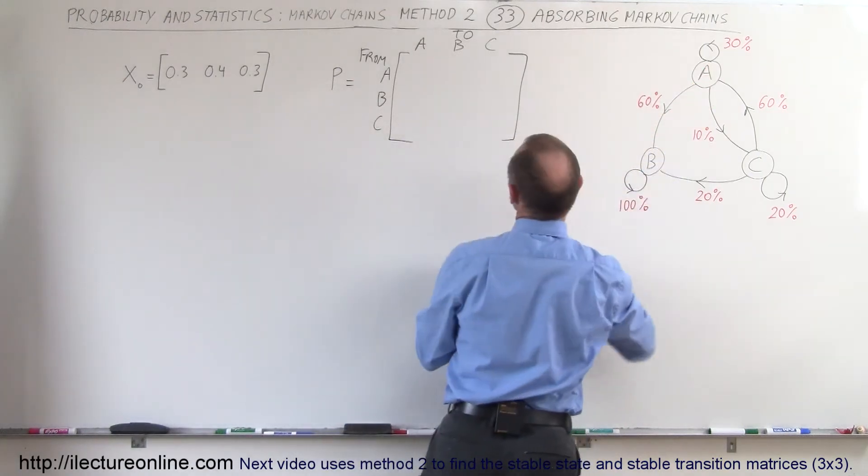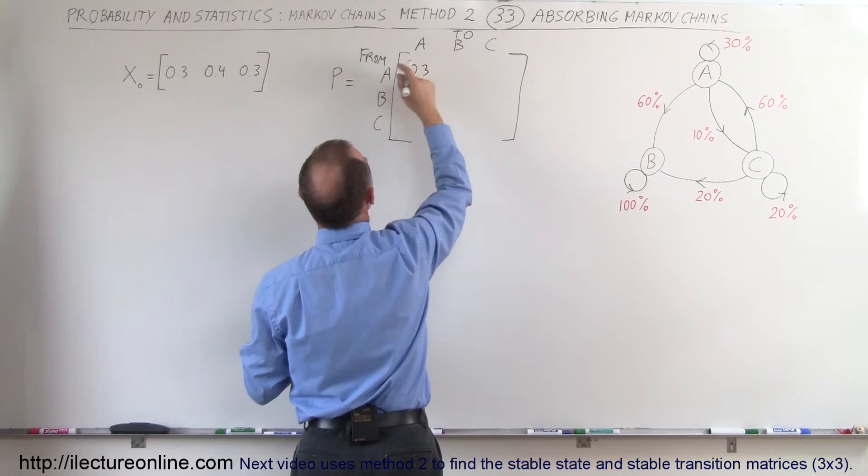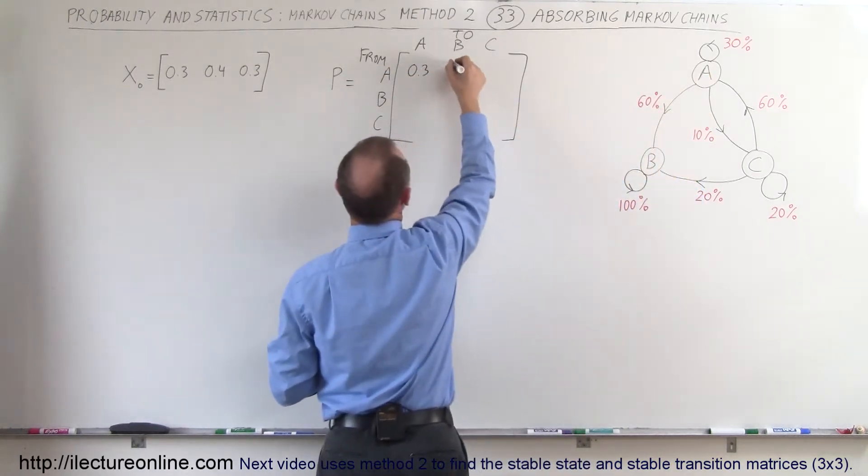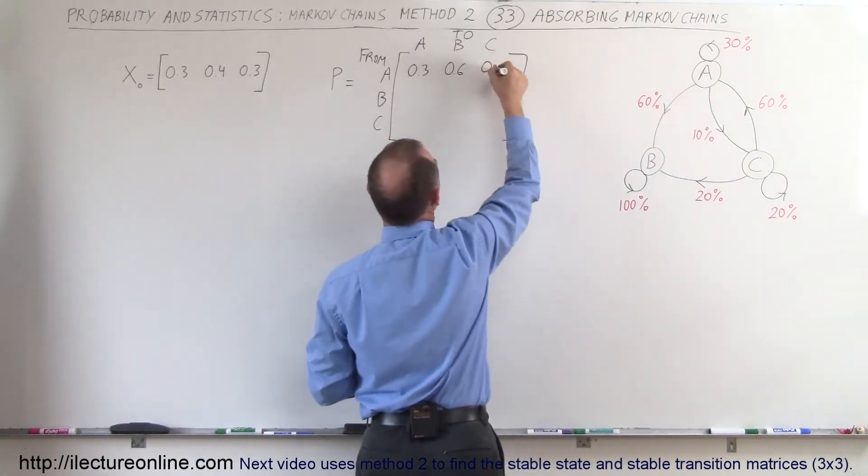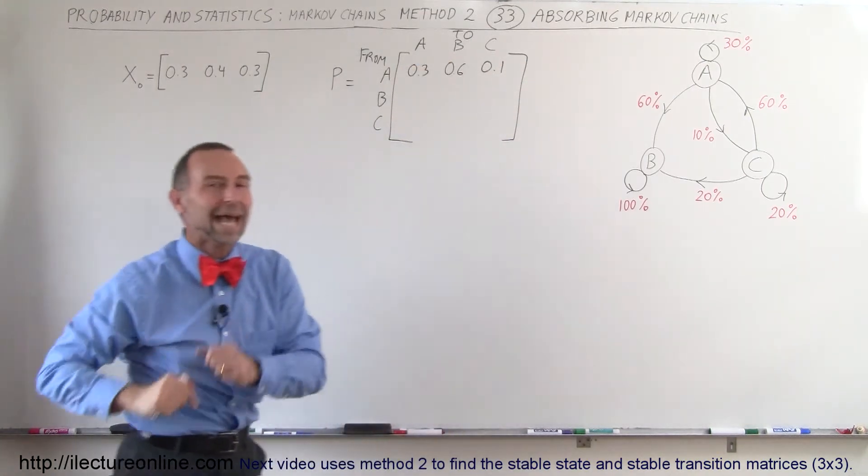From A to A it'll be 30%. So from A to A it's right here, that is 0.3. From A to B, from A to B is 60%, 0.6. And from A to C is 10%, that would be 0.1. Again, those numbers from left to right horizontally need to add up to 1.